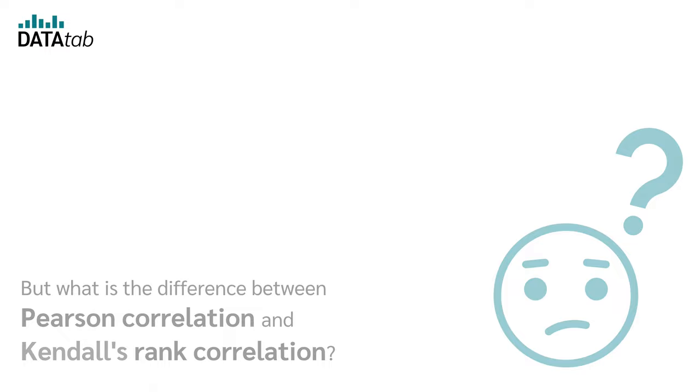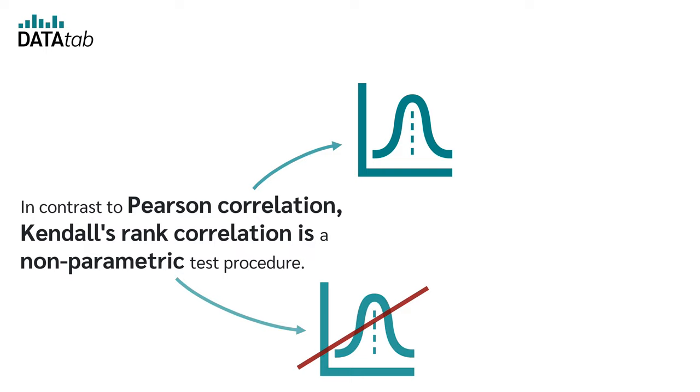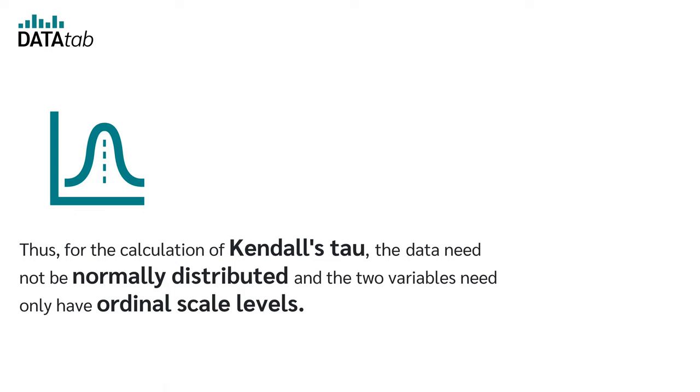In contrast to Pearson correlation, Kendall's rank correlation is a non-parametric test procedure. Thus, for the calculation of Kendall's Tau, the data need not be normally distributed and the two variables need only have ordinal scale levels.